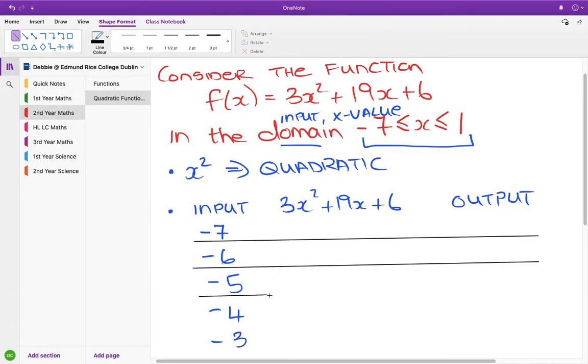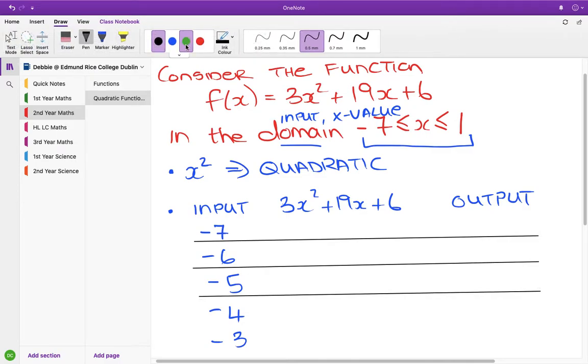Okay, so the first one I'll do, I'm not going to do all of them out because we can just use our calculators. So it's 3 and in place of the x we're going to put in the input which is minus 7 squared plus 19 and then minus 7 and then plus 6. So you can put this into your calculator using the table function.